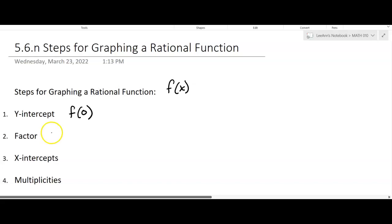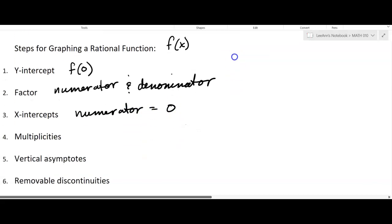Then you're going to factor the numerator and the denominator. Then you're going to find the x-intercepts. The x-intercepts come from setting the numerator equal to 0. That's where the x-intercepts come from.